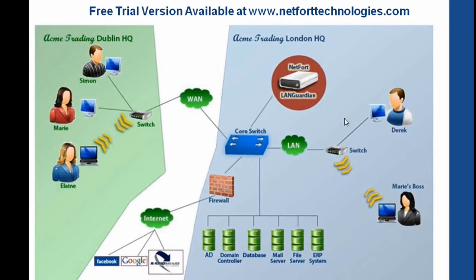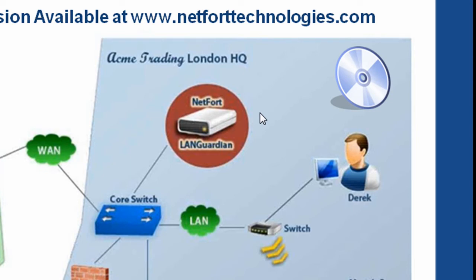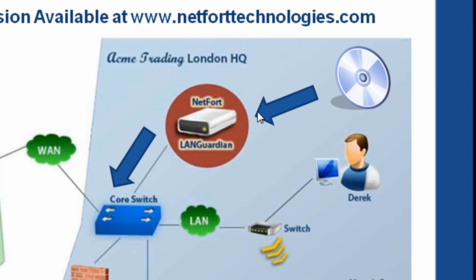Go to www.netforttechnologies.com and click on the button for the free trial. That will allow you to download an ISO file. Copy that onto a CD and pop the CD into a server or PC — the main requirement is that you've got to have two network cards. Plug that PC into your core switch, set up port mirroring, and that's it. You're installed and you've got visibility as to what is happening on your network.